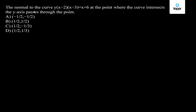Hi guys. The question states that the normal to the curve y(x-2)(x-3) = x + 6 at the point where the curve intersects the y-axis passes through a given point. We need to find out which point lies on the normal at the point where the curve intersects the y-axis.